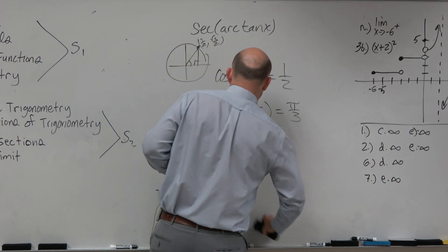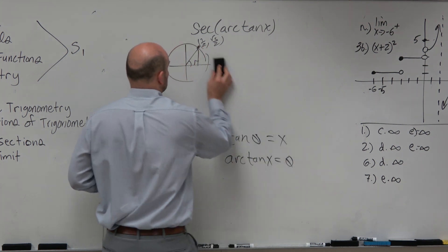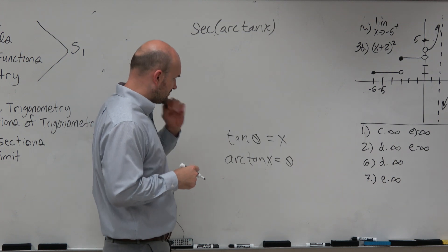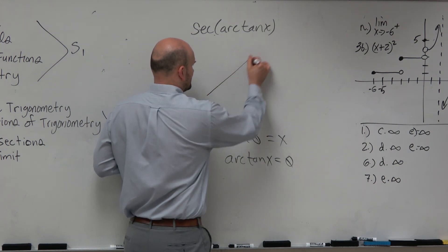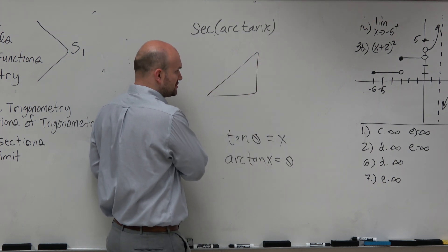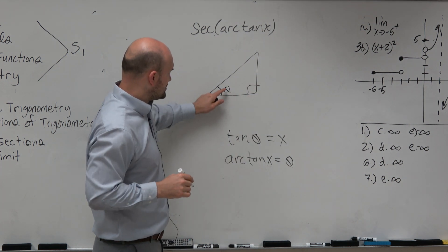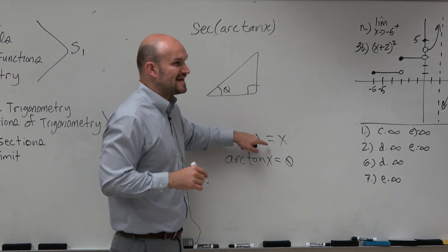All right, so hopefully from there, we kind of understand this relationship a little bit, at least with the arc and inverse. So let's draw a triangle then, because we don't have anything really on the unit circle to understand this. So let's say here's theta. So the tangent of theta equals x. Well, again, what does tangent represent?